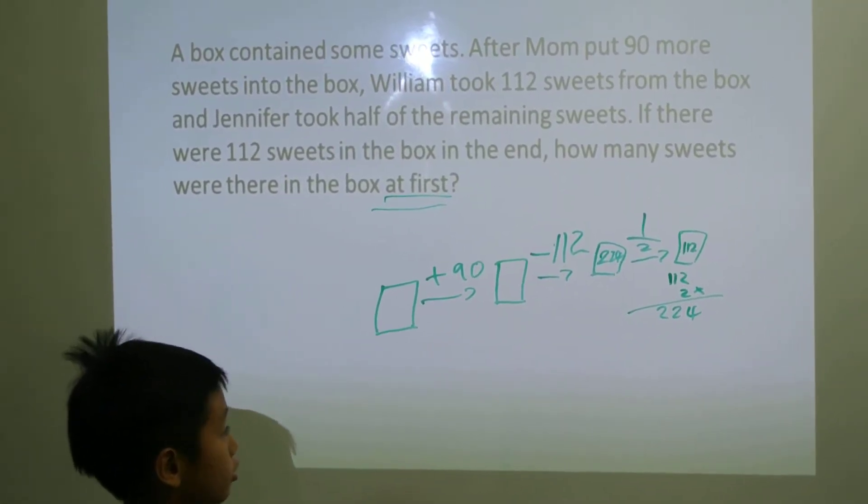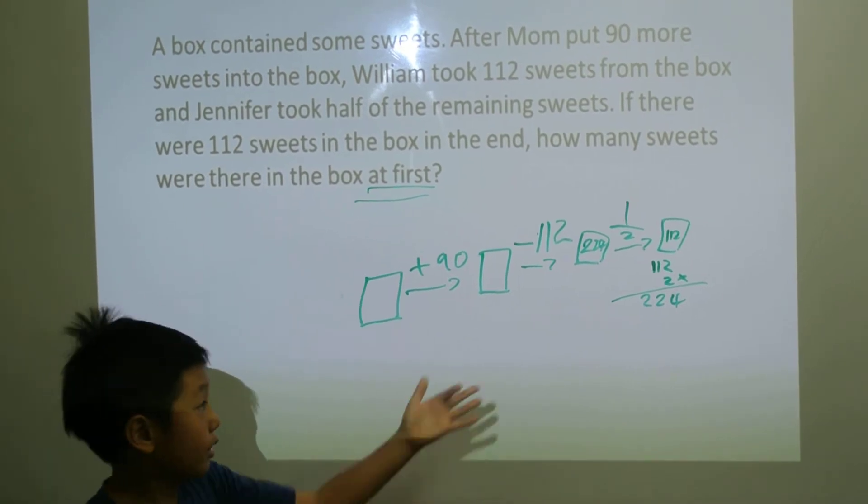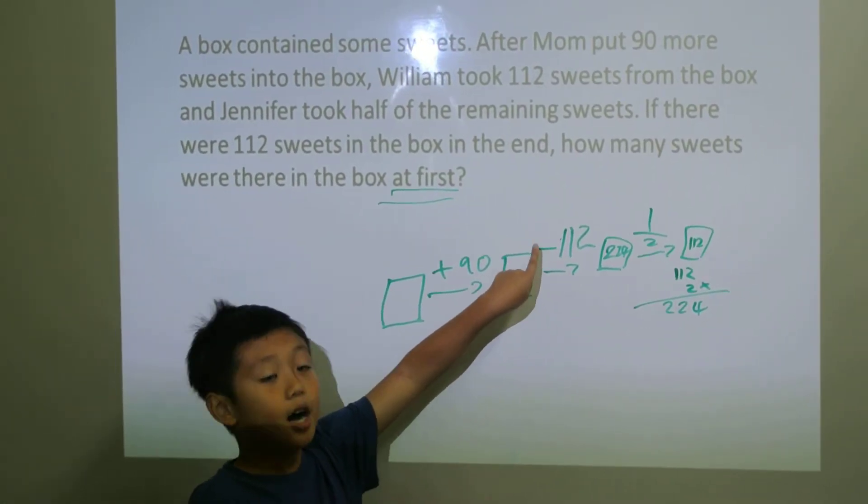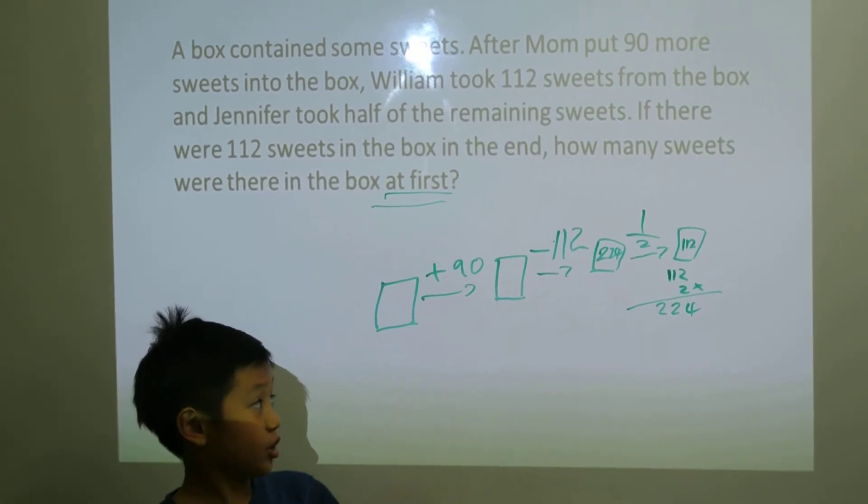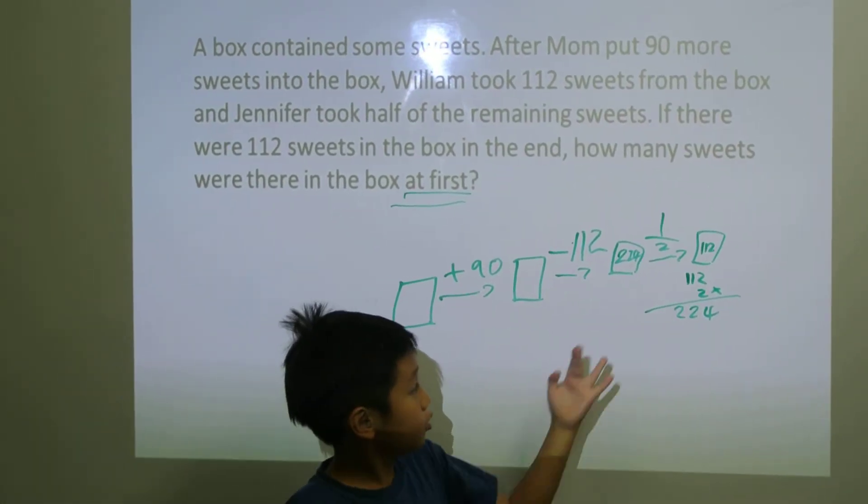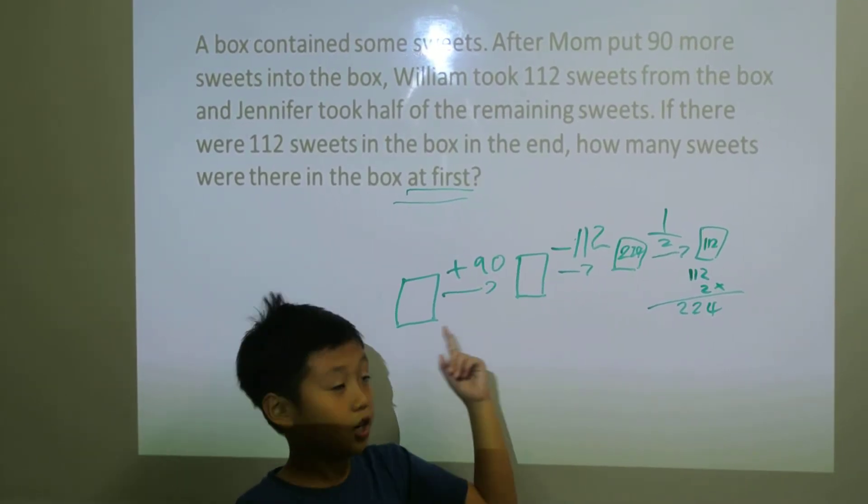Now we do 224 and 112. What does this sign mean? It's a minus. So we do the opposite of minus, which is a plus. So we do 224 plus 112.